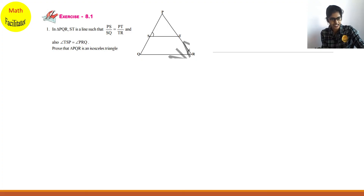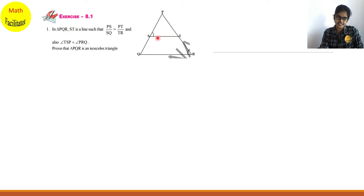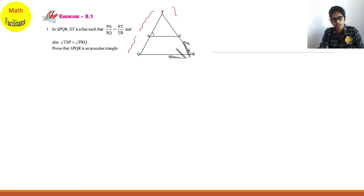Let's start with question number one. In triangle PQR, it is given that PS/SQ = PT/TR. That means line ST is dividing the two sides PQ and PR in the same ratio. Just see here — these are the two sides PQ and PR, and PS/SQ = PT/TR.